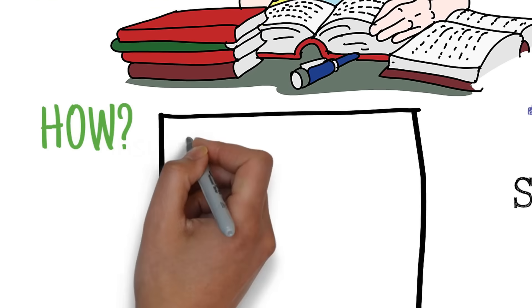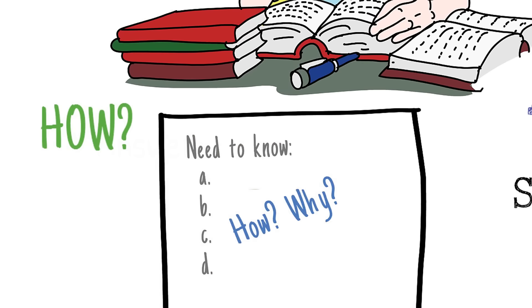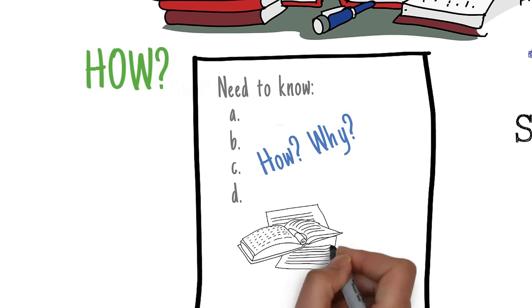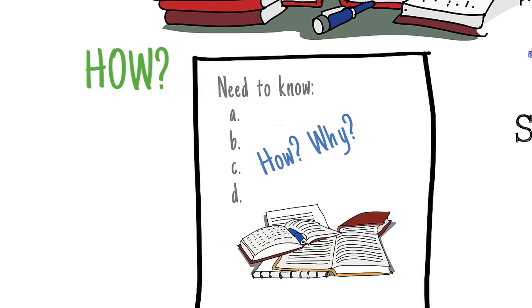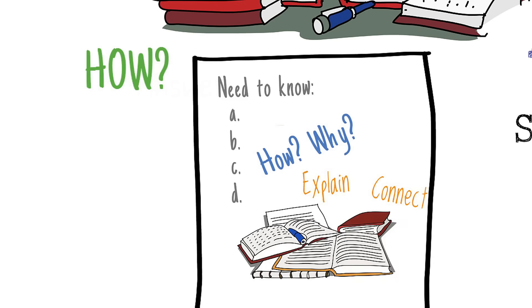Start with your notes and textbook and make a list of the ideas you need to learn. Go down the list and ask yourself questions about how these ideas work and why. Then go through your class material again and look for answers to your own questions. Make connections between different ideas and explain to yourself how they work together.